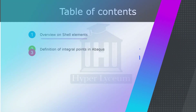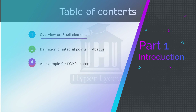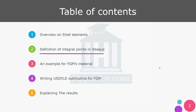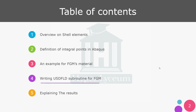Firstly I'm going to explain shell elements and then I'm going to give you the definition of integral points and section points in Abacus software. Next the simulation is explained in the form of an example. After that I will explain how to write the USDFLD subroutine code for FGM, and finally the results are examined.